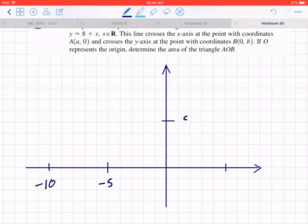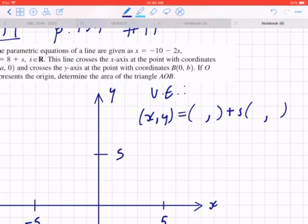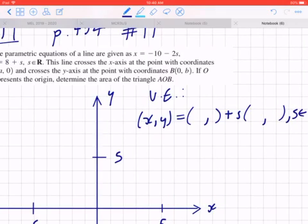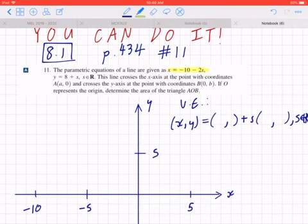You can always rewrite this in vector equation first before graphing. So if you look at the given, the corresponding vector equation pairs these accordingly by first looking at the x component. X equals negative 10 minus 2s, so negative 10 goes there and negative 2 goes there. Likewise, if you look at the y component, y equals 8 plus s, so you can plug in 8 and 1 respectively.